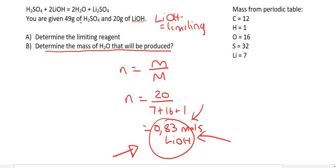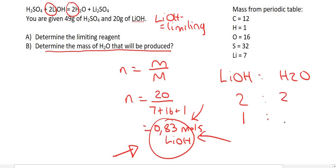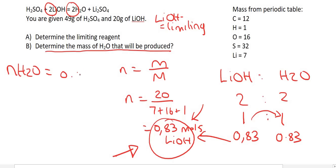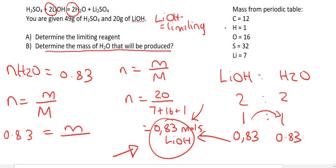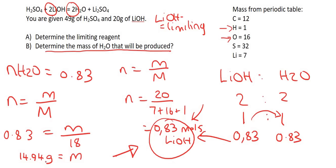The question says: determine the mass of H₂O that will be produced. The ratio of LiOH to H₂O is 2 to 2, which simplifies to 1 to 1. We have 0.83 moles of LiOH, so we'll produce 0.83 moles of H₂O. Using n = m over M with molar mass of H₂O equal to 18 (two hydrogens plus one oxygen), we end up with 14.94 grams of H₂O. I know we worked quickly in this lesson, but I hope you saw the repetition and how to handle these types of questions. Thank you very much for watching.